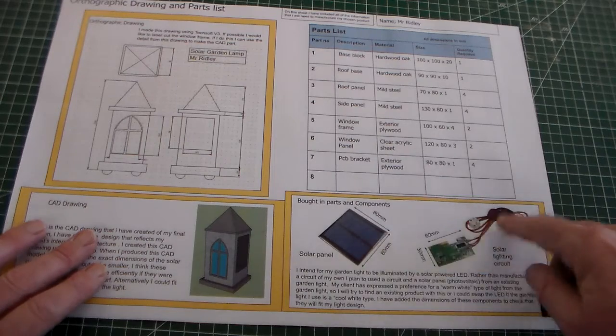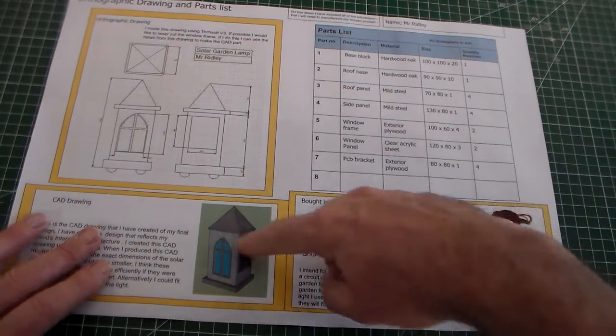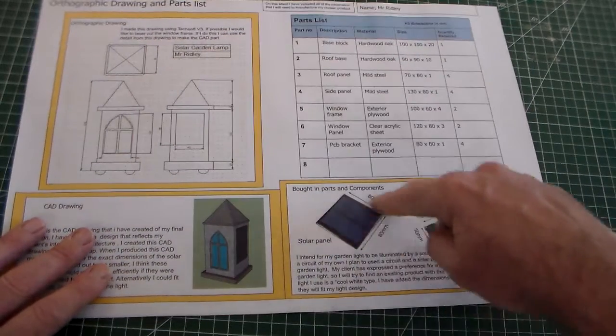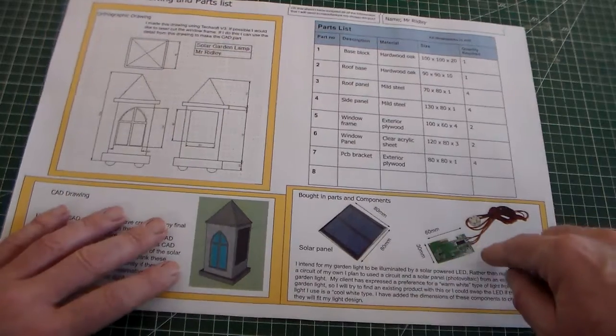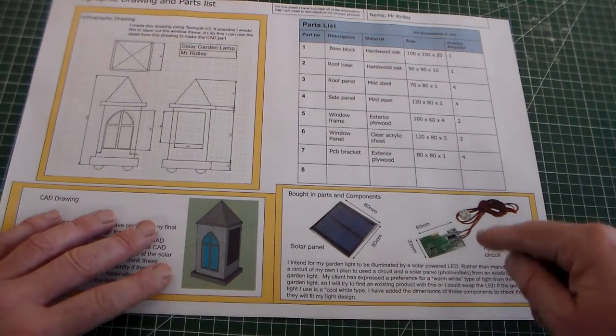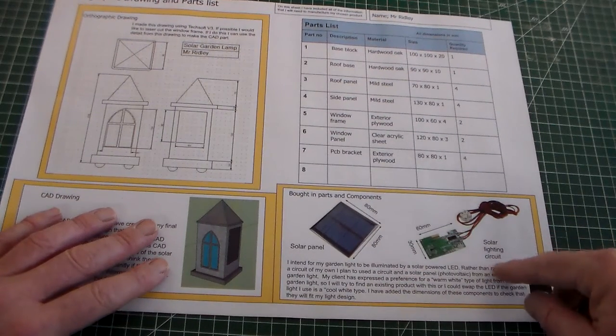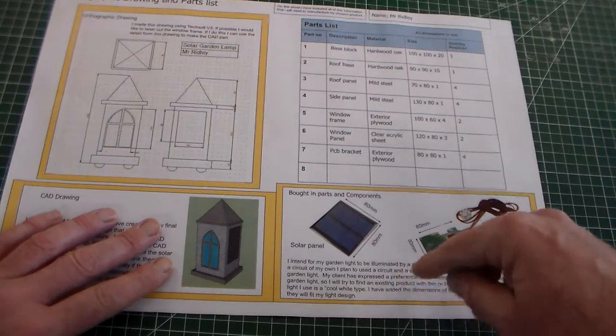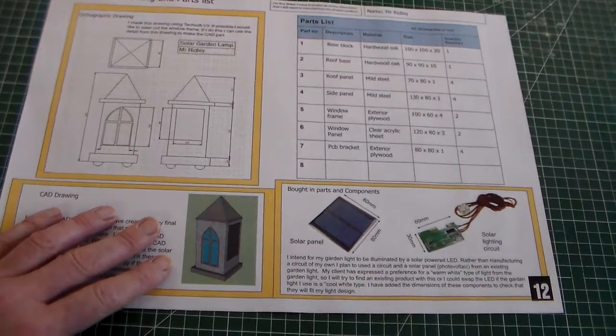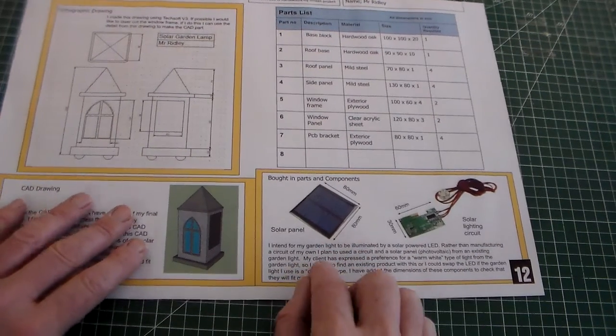We've also included bought-in components. For this garden light project, we have a solar panel that will be fitted to the side and a solar lighting circuit.